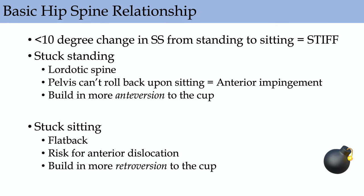The basic hip-spine relationship: less than 10 degrees change in sacral slope from sitting to standing describes a stiff lumbar spine. Stuck standing means a more lordotic spine — the pelvis can't roll back when sitting, risking anterior impingement and posterior dislocation. For those patients, build in more anteversion to the cup. Stuck sitting means a flat back deformity and risk for anterior dislocation — build a little more retroversion into the cup.